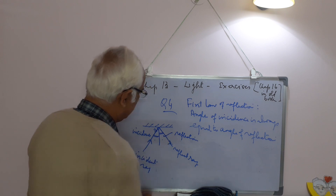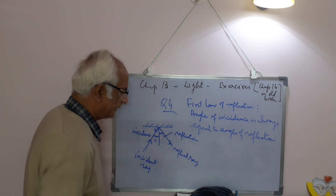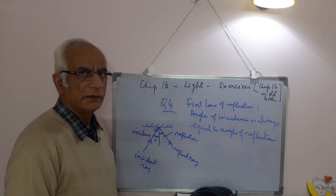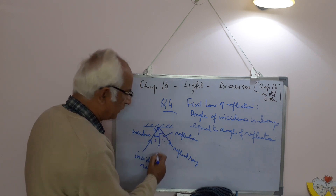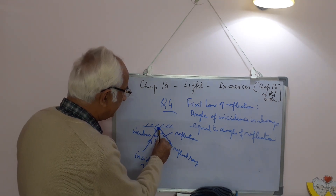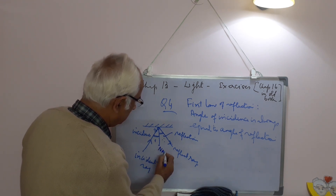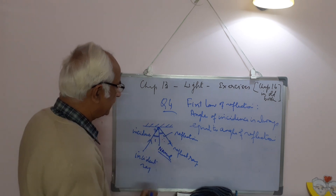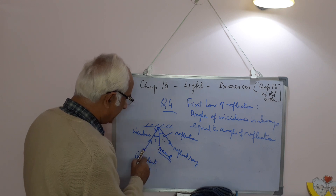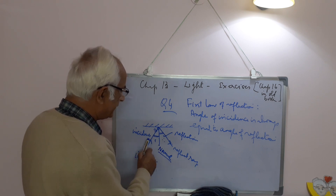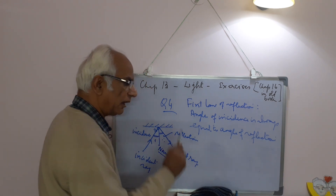If the angle of incidence is 30 degrees, the angle of reflection will be 30 degrees. If it is 40 degrees, it will be 40 degrees. If it is 60 degrees, it will be 60 degrees. The normal is a line at 90 degrees to the surface of the mirror. The incident ray strikes the mirror; the angle between the incident ray and the normal is called the angle of incidence, and the angle between the normal and the reflected ray is called the angle of reflection. Both these angles are always equal.